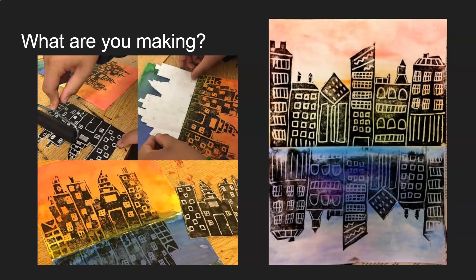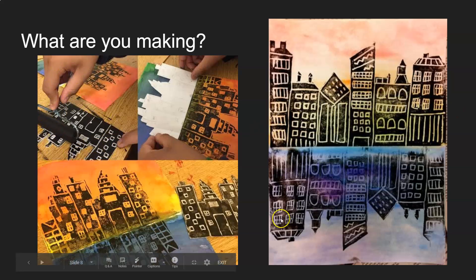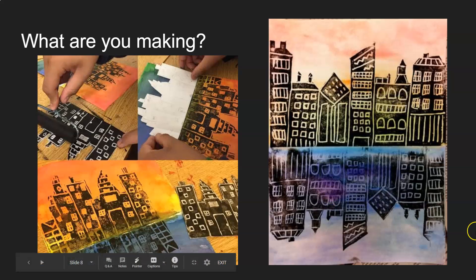You're going to be pressing your drawing of your cityscape into that styrofoam sheet. Then I'll be teaching you how to add ink to it — you can see this person here is adding ink to their cityscape — and you'll be printing it on papers that you have painted. We're going to get started on that in class.